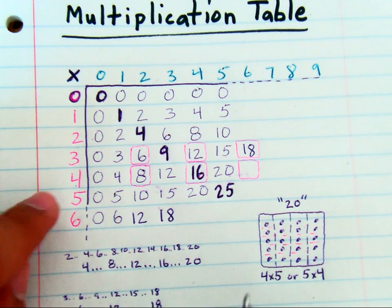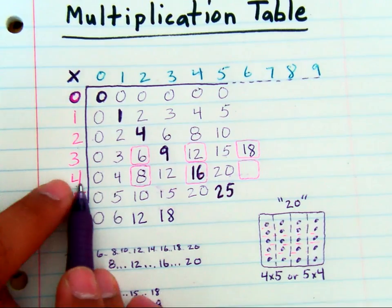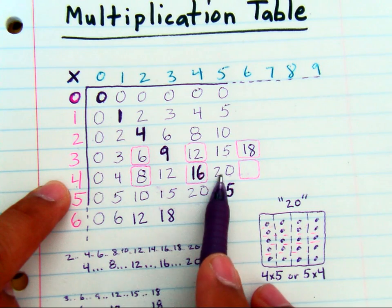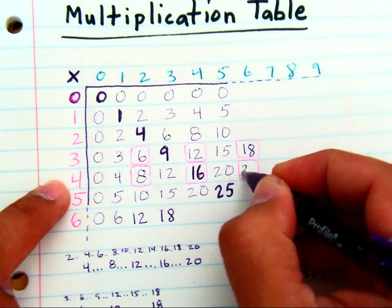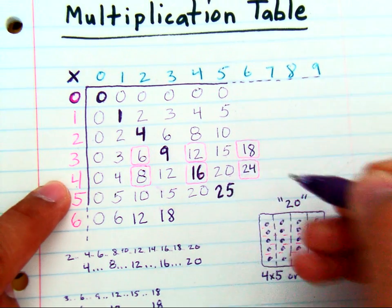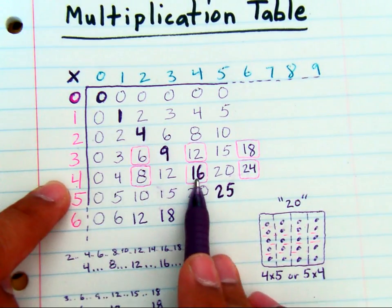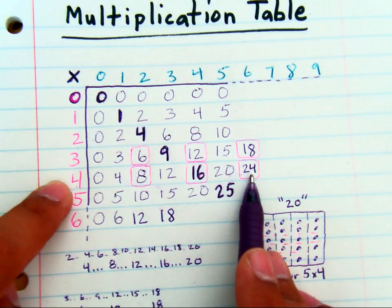And just like that, you can do the same thing with fours: four, eight, twelve, sixteen, twenty, twenty-four. So if you count by eights - from zero to eight to sixteen to twenty-four - if you know your fours, you know your eights.